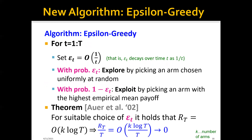This is why you need a new algorithm called epsilon-greedy. In the epsilon-greedy algorithm, for each round t, we set a number epsilon_t to be equal to some value that decays over time at a rate of at least one over t. The algorithm works as follows: with probability epsilon_t, it will explore by picking an arm chosen uniformly at random from the K arms. Then with probability one minus epsilon_t, the algorithm will exploit by picking the arm with the largest empirical average payout.